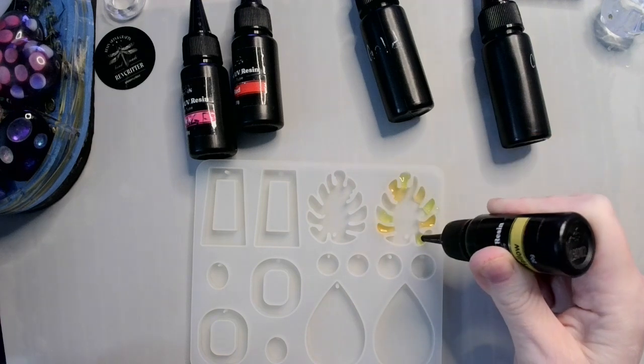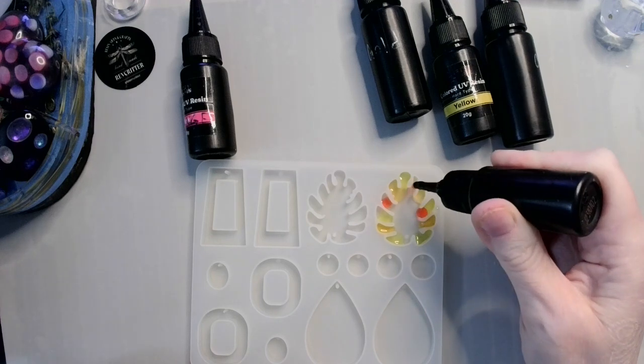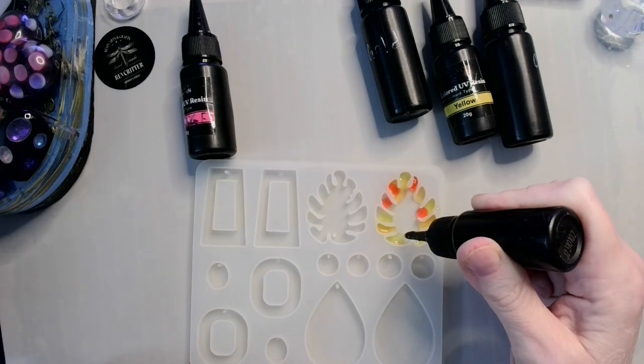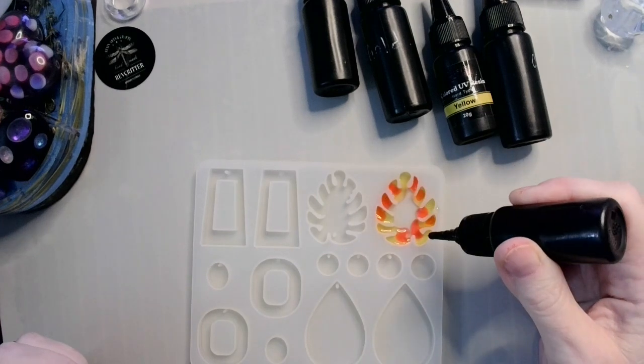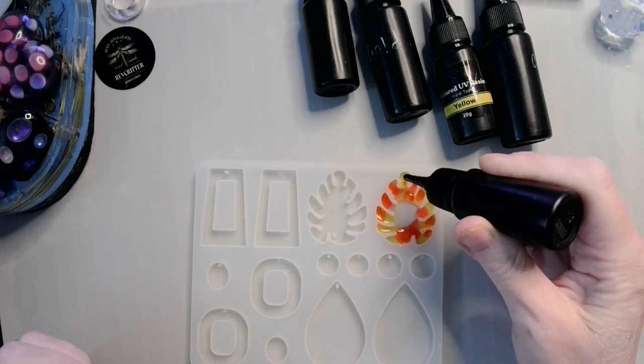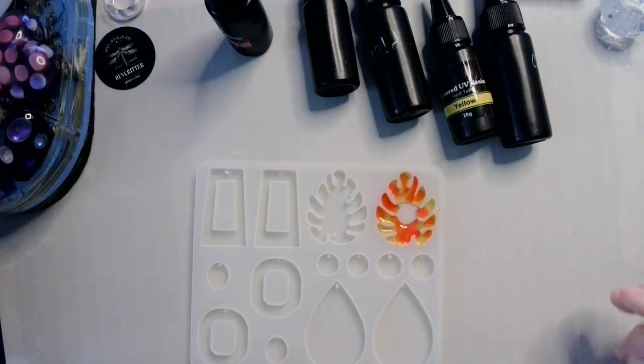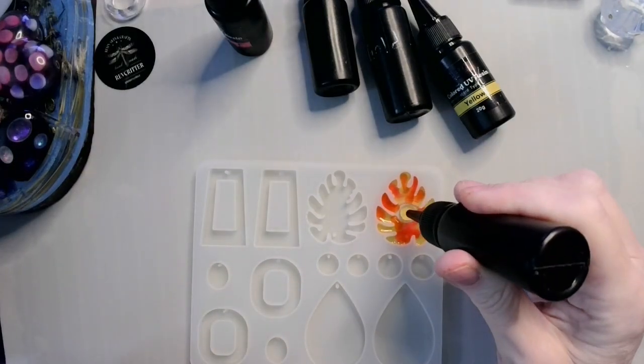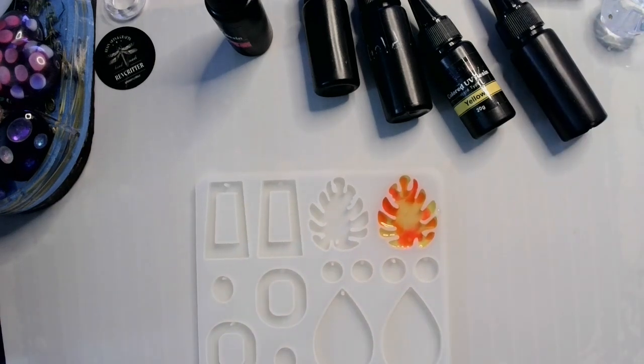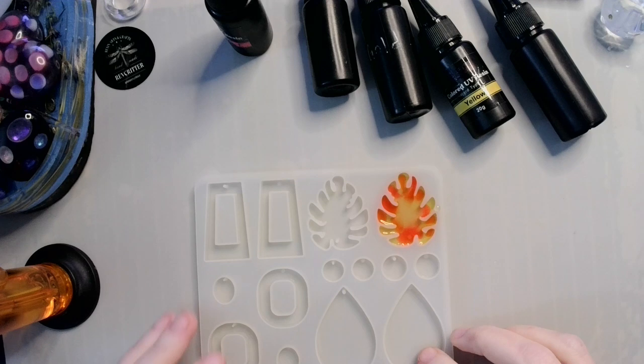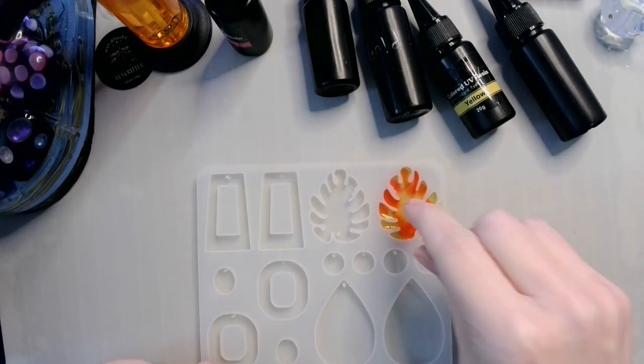And I'm just going to drop plops of different colors in where I believe are appropriately turkey-feathered colored spots. All right. Okay. So, we've got that.